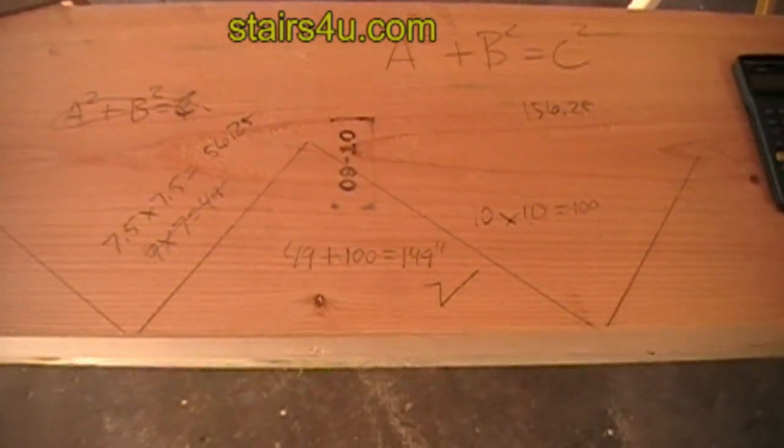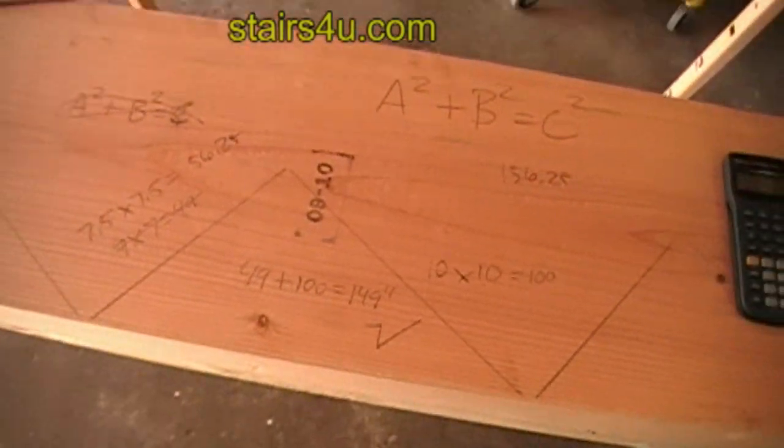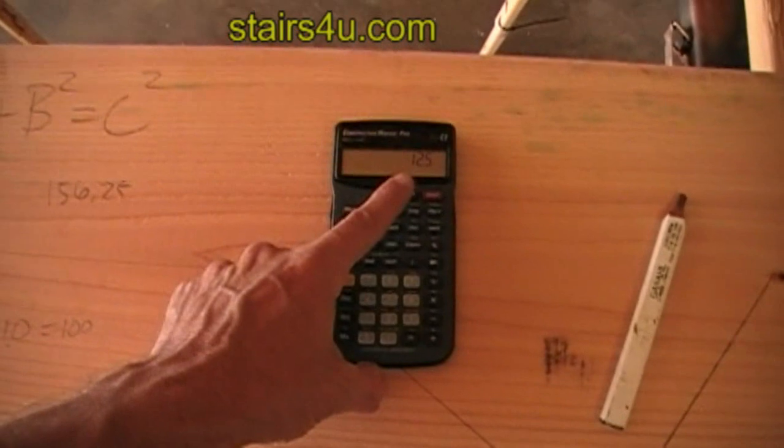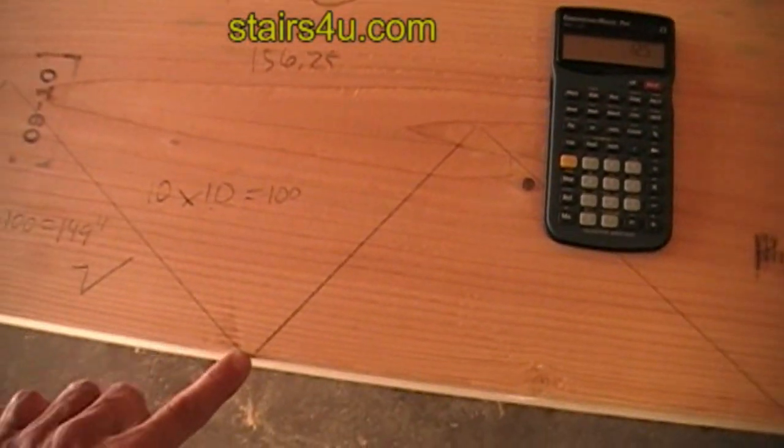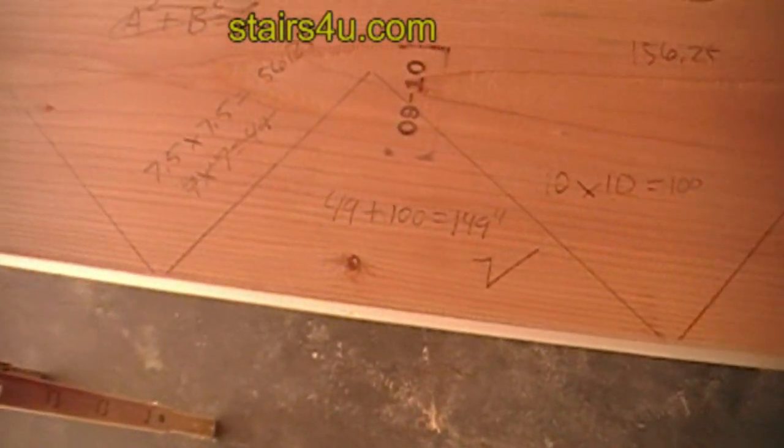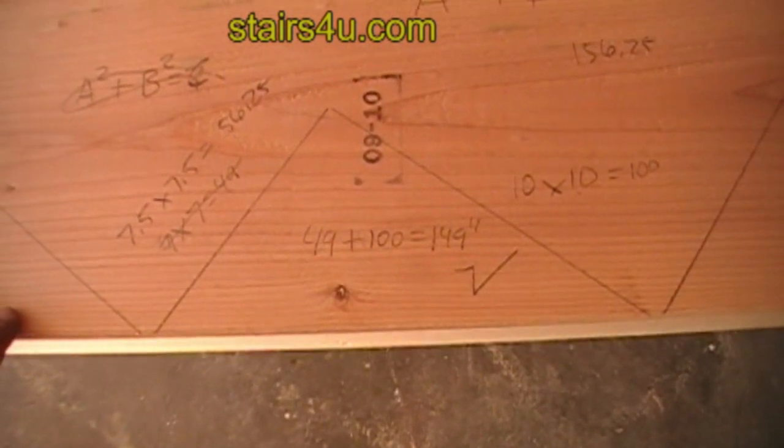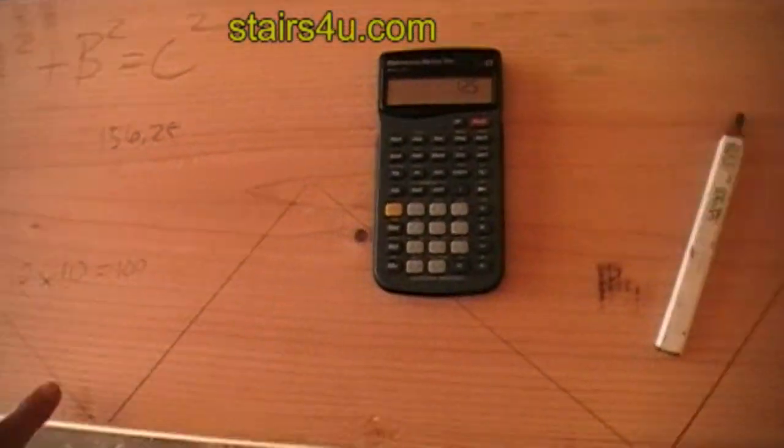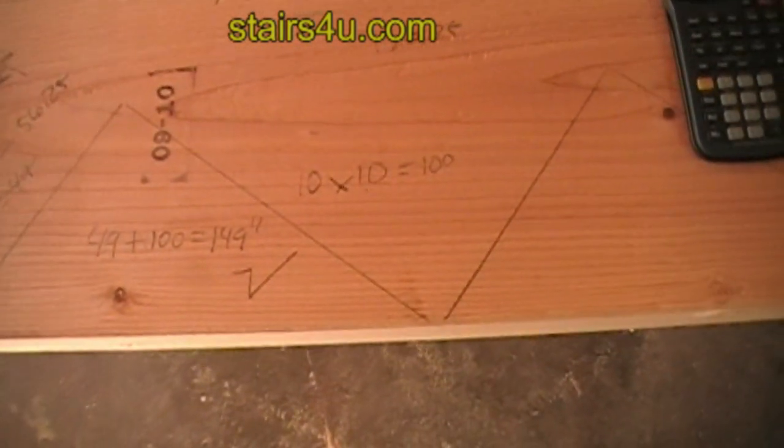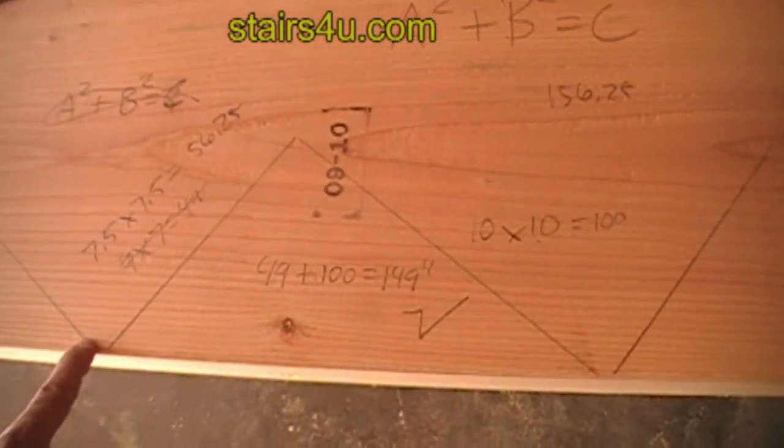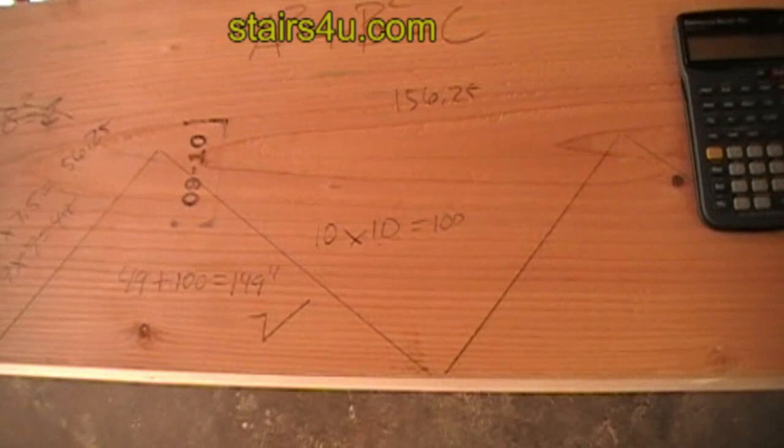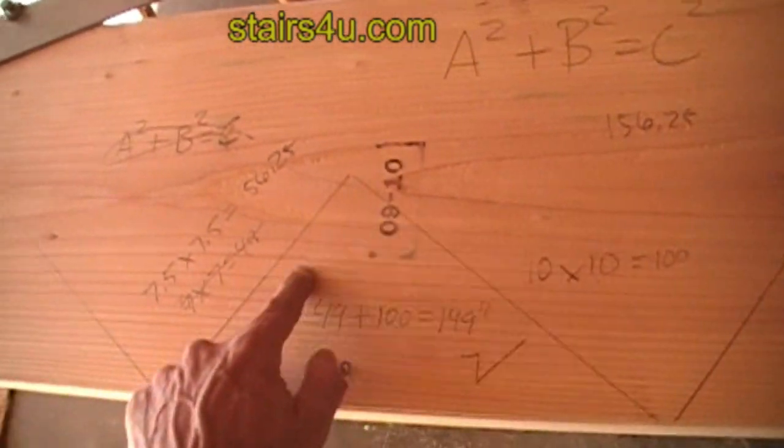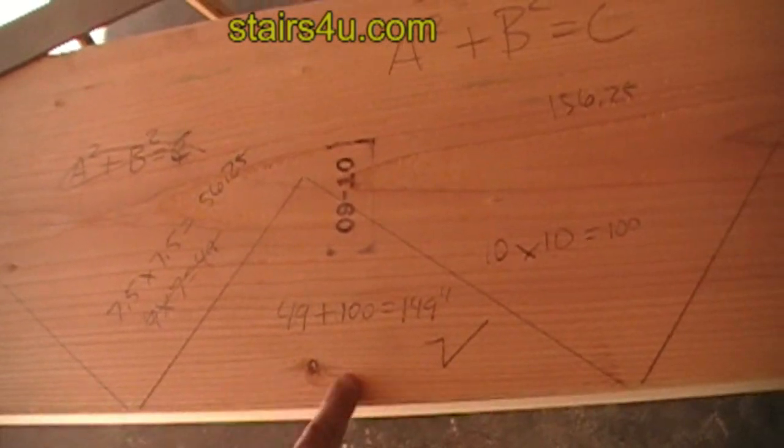That is the Pythagorean theorem. You can use it for figuring out rafters. Once we have this measurement of 12 and a quarter, we can use it for figuring out the length of lumber we need. Let's say I have 12 and a quarter and I have a 10-step stairway that I'm going to build. I can multiply by 10, which would give me the length here, because these numbers aren't going to do me any good for figuring out the lumber lengths.